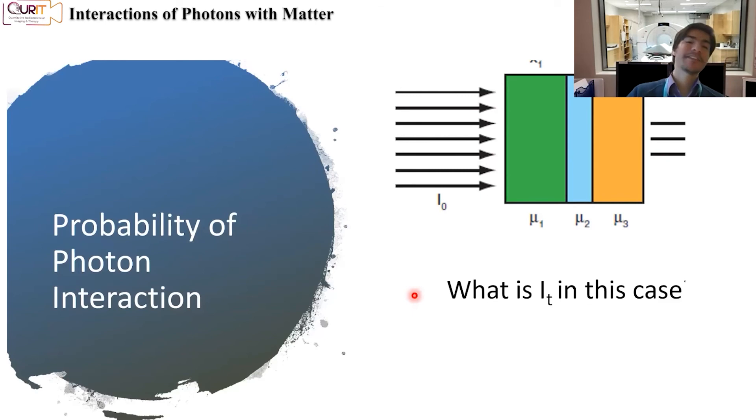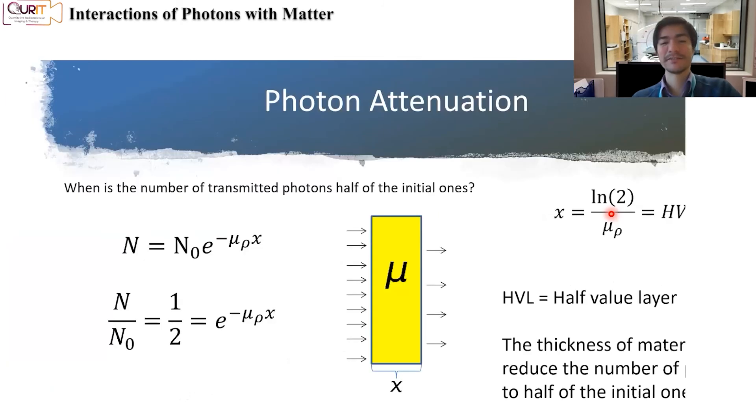So you can then think, what is the probability of photon interaction? What is the transmitted number of photons in a situation in which you, for example, have one material followed by another material and followed by another material? So can you think of that as well? And try to get to an answer?